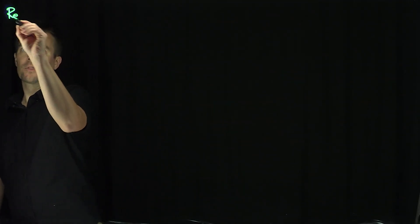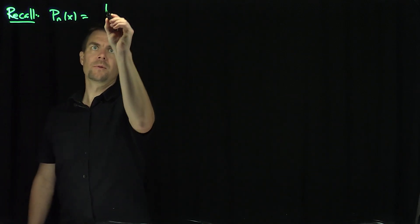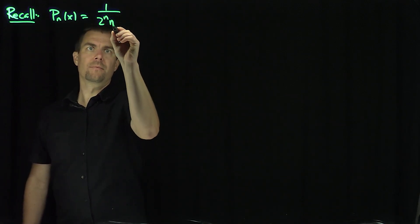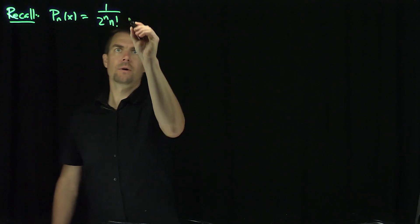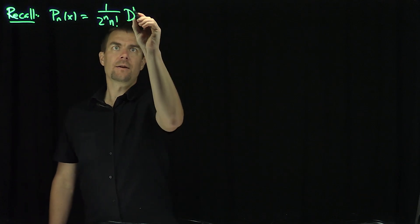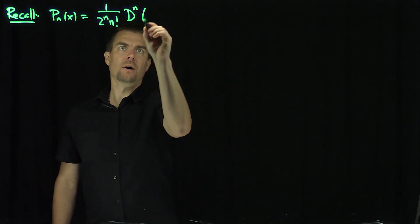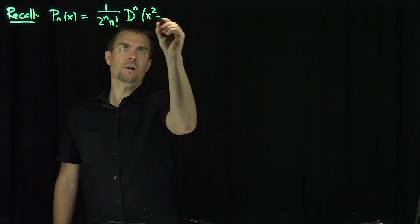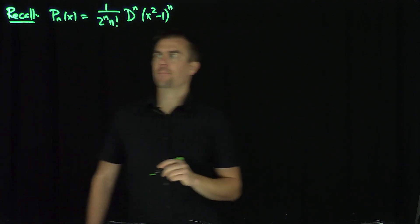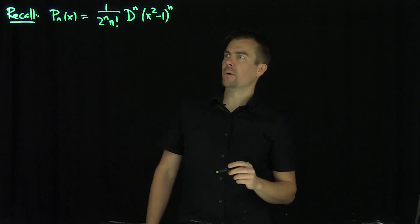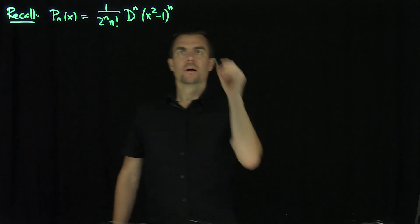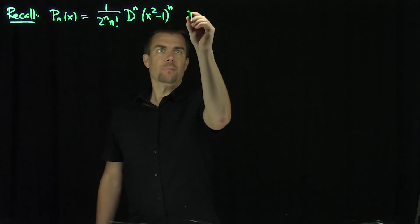Let's recall the Rodriguez formula: that P_n of x, the nth Legendre polynomial, is 1 over 2 to the power n, n factorial, times the nth derivative of x squared minus 1 to the power n. That's the nth Legendre polynomial, and this is the Rodriguez formula.